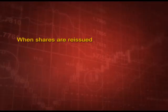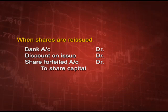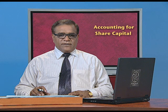When these shares are reissued, the entry will be bank account debit, discount on issue debit for the original discount, and if still some discount is needed it will be debited to share forfeited account, and credit to share capital. The important point is: whatever discount was originally created is again debited on reissue, and if we need more discount it is taken from share forfeited account. To conclude: first debit the discount on issue, then credit on forfeiture, then debit again on reissue.